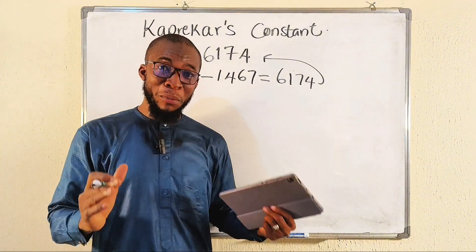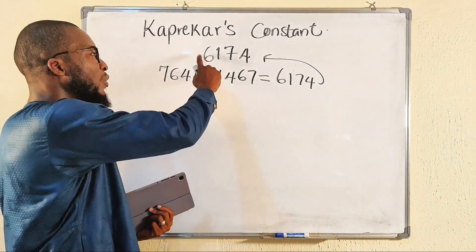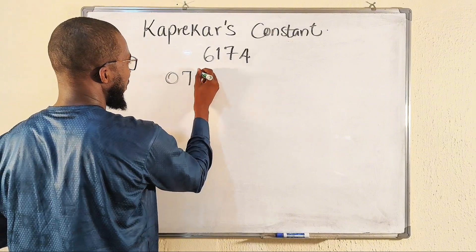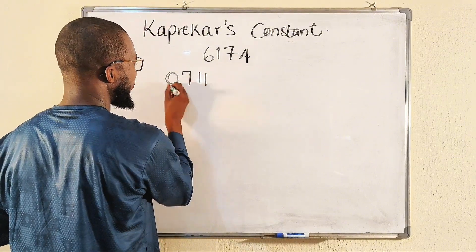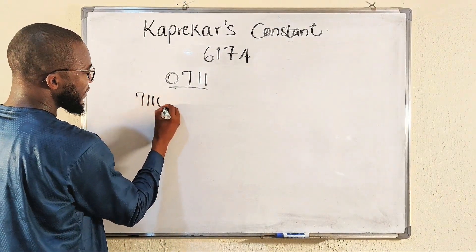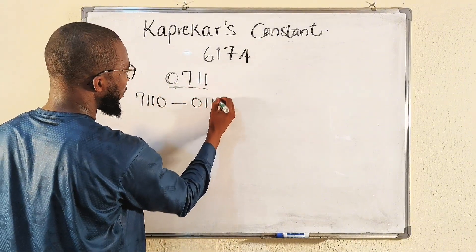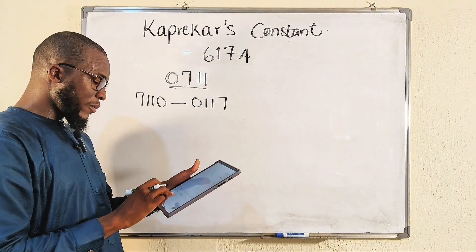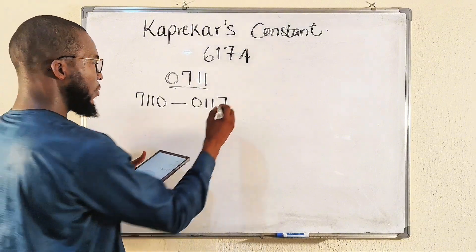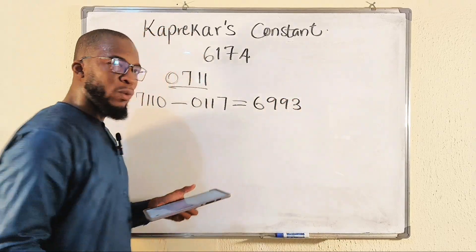So let us think of a number differently. Repeat the same iteration on or before the seventh — we must get this number back. Let me take 0711. This is a four-digit number. The biggest number we can form here is 7110, minus the smallest one, which is 0117. So let's find the difference: 7110 minus 0117, and we get six thousand nine hundred and ninety-three.